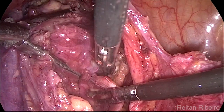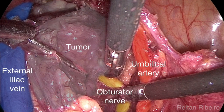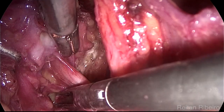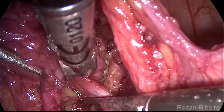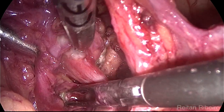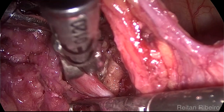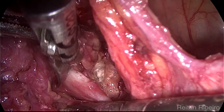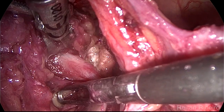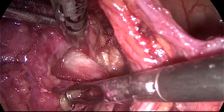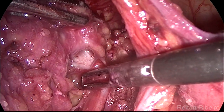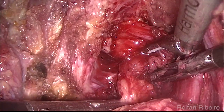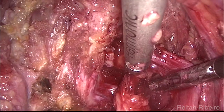The tumor was also firmly adhered to the obturator nerve. At this point, the tactic was to preserve the nerve and to perform a shaving of the lesion. Approximately 1.5 cm of the tumor was adhered to the nerve. At the end of this dissection, the nerve is seen adequately preserved. The resection included the obturator vessels.